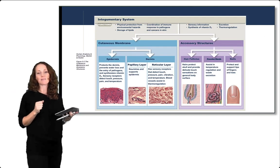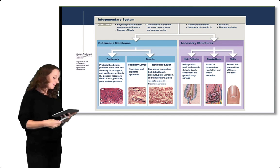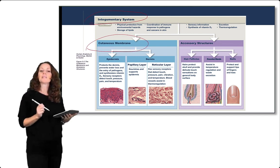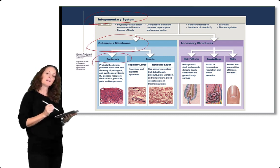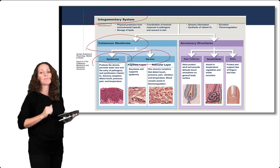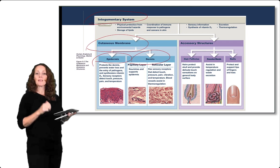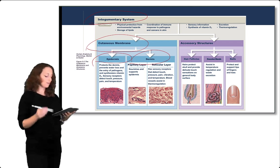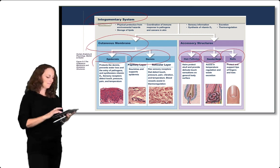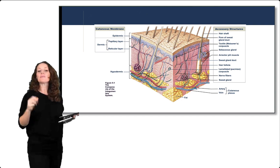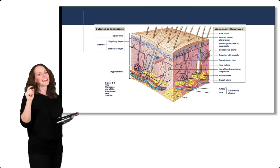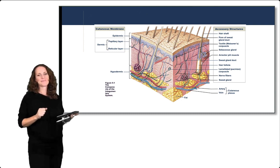Here's an overview of the integumentary system discussed so far. The integumentary system is composed of the skin — the cutaneous membrane — made up of the epidermis and the dermis, with the subcutaneous or hypodermis layer below. In the next lecture, we will talk about accessory structures of the skin: hair follicles, glands, and nails. Take a look at the labels and anatomy of this image, then try to re-label everything to test your knowledge.